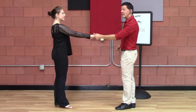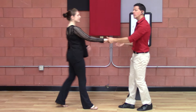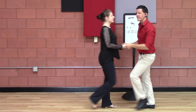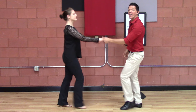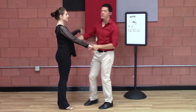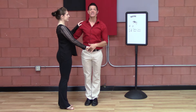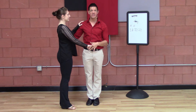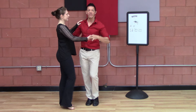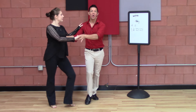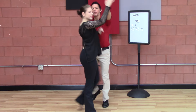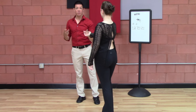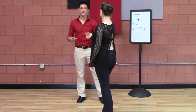If I counted that in numbers, it would be one, two, triple three and four, triple five and six. If I did an East Coast Swing basic starting on the walk — that would be my rock step — I would have walk, walk, triple step, triple step. So two walks and two triples.